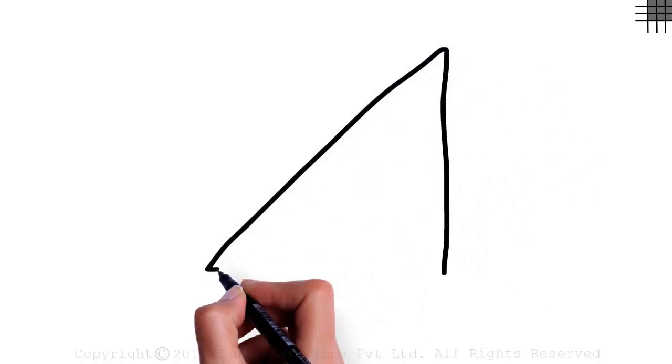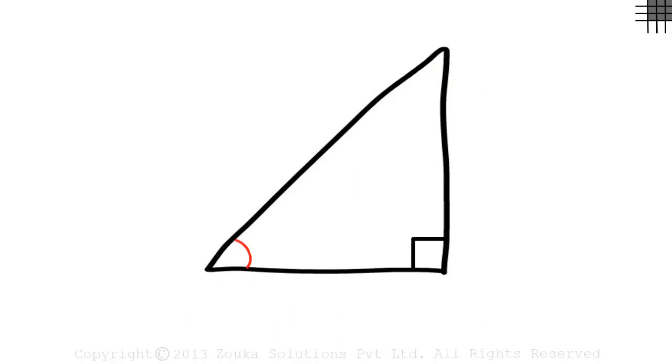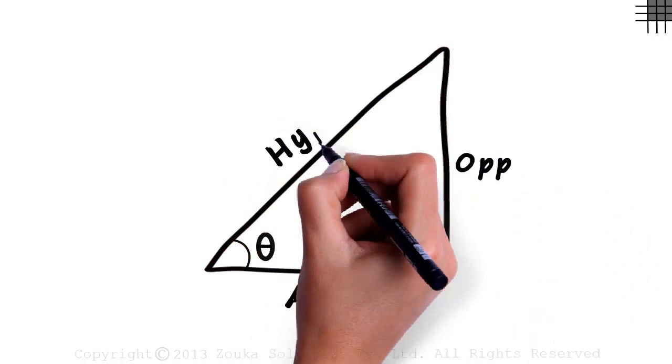In this session we will look at all the six functions in trigonometry using a right triangle. Let this be angle theta, this will be the side adjacent to theta, this will be the side opposite to theta, and this is the hypotenuse.